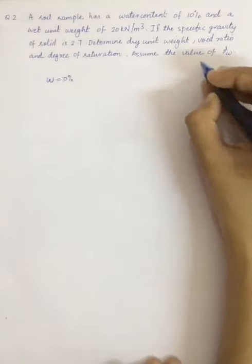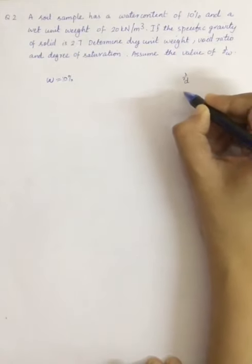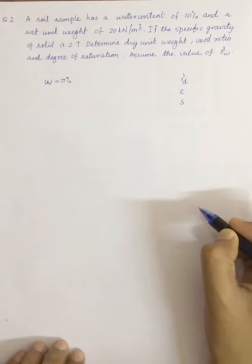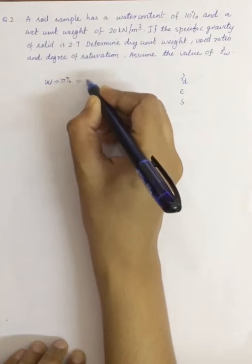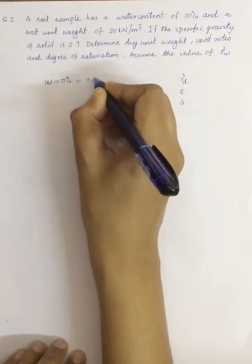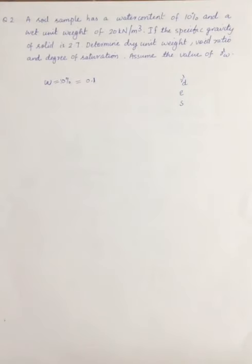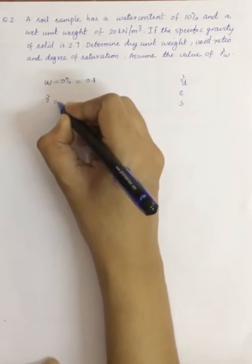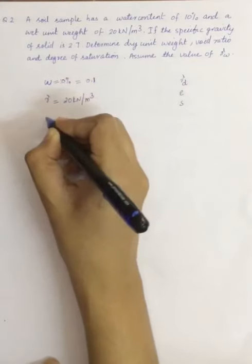So they asked to find dry unit weight, void ratio, and degree of saturation. The data which is given: water content of 10 percentage. We can write it in decimal for doing the calculations, w is equal to 0.1.